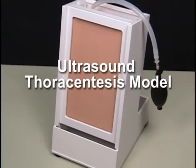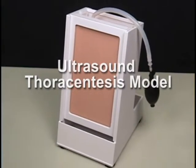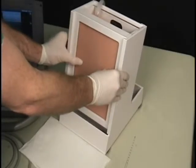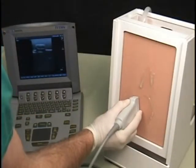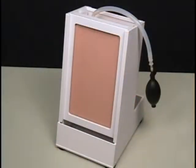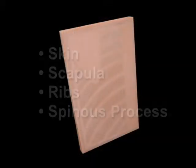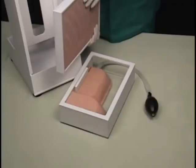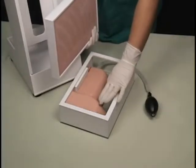Simulab's ultrasound thoracentesis model is anatomically correct, with landmarks that can be palpated and viewed under ultrasound. The simulated partial torso includes skin, scapula, ribs, and spinous process, which are all integrated into the model's replaceable tissue. The pleural space, which can be filled with fluid, includes a diaphragm and a replaceable lung.